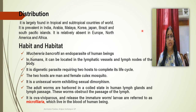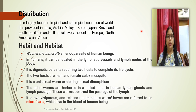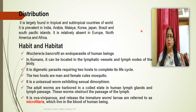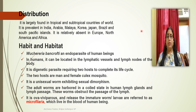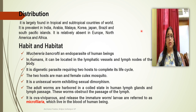Regarding habit and habitat, it is an endoparasite of human beings, located in the lymphatic vessels and lymphatic nodes. It is a digenetic parasite requiring two hosts for completion of its life cycle: the primary host is the human, and the secondary host is the mosquito, specifically Culex. It is unisexual and exhibits sexual dimorphism.